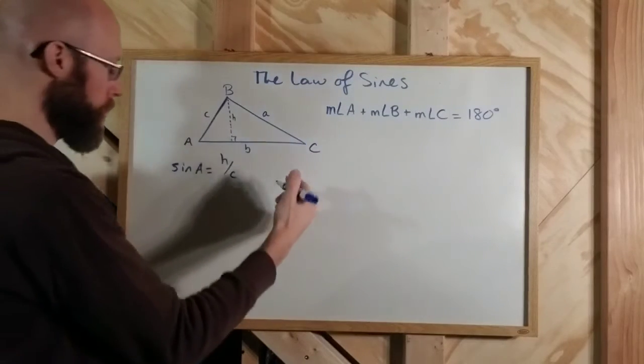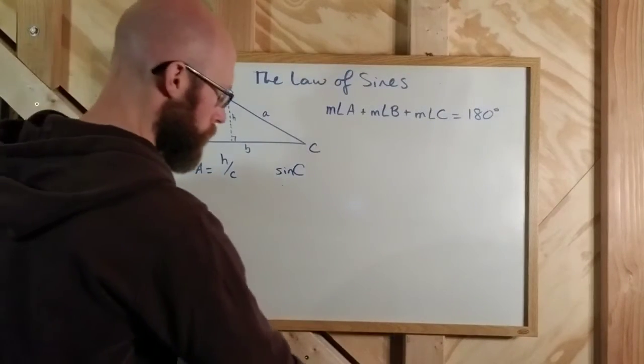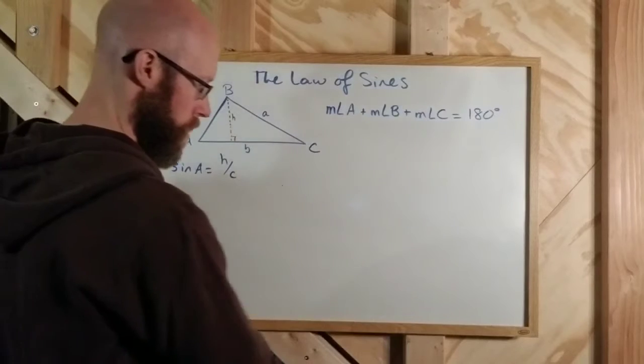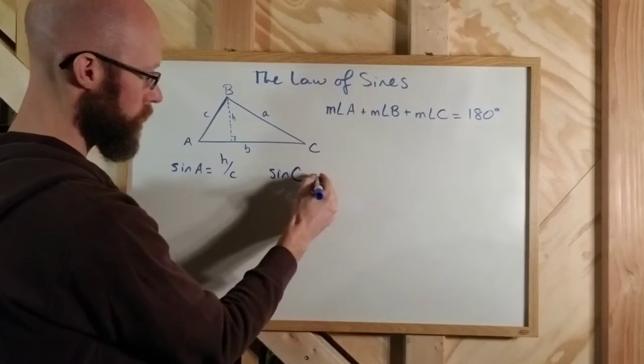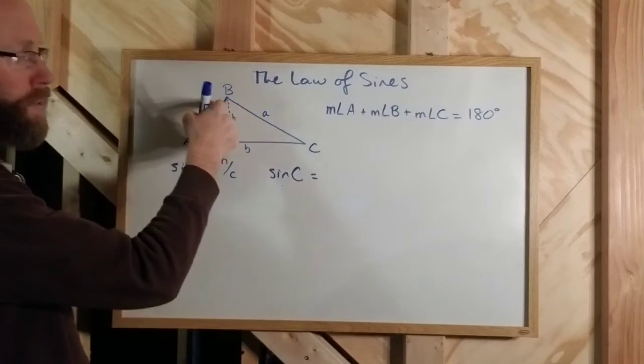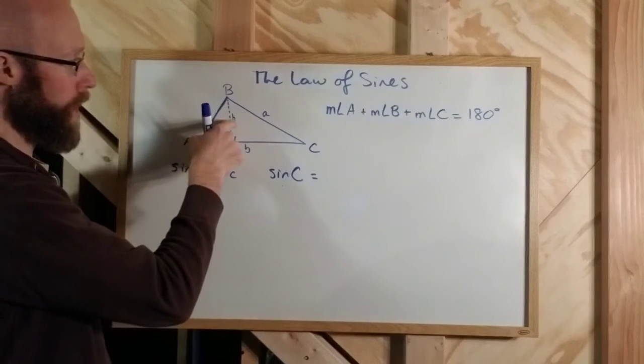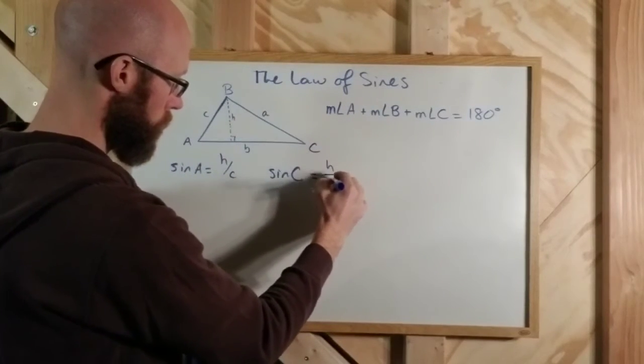Think about angle C on the other side. Sine of C, whoa, I wrote that kind of funny. Let's do that again. Sine of C is equal to opposite over hypotenuse for the triangle on the right. So again, opposite is H, hypotenuse is A, so it's H over A.